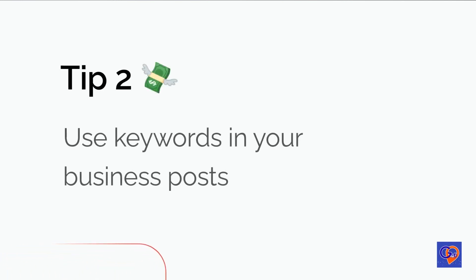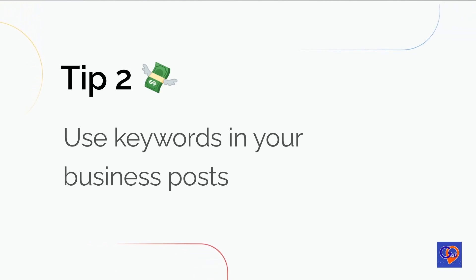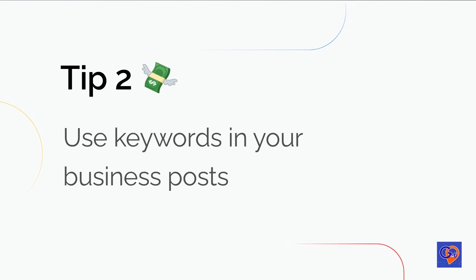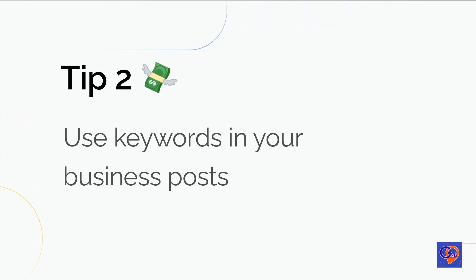Tip 2: Use keywords in your business posts. The Google My Business posts feature allows you to share updates, offers, and events with potential customers. Use this feature to incorporate relevant keywords into your posts and improve your visibility in search results. Just be sure to use keywords naturally and avoid keyword stuffing.